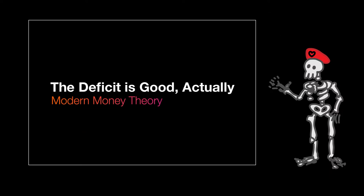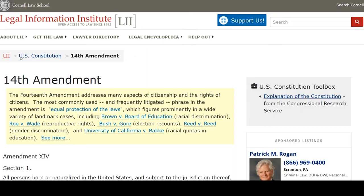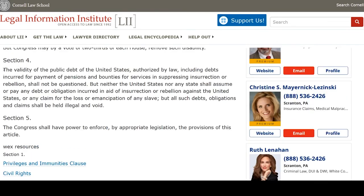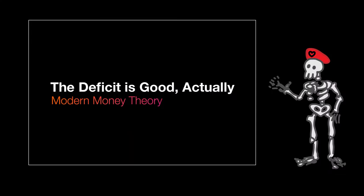So the United States can never, ever be unable to pay its debt. It also can't ever voluntarily not pay its debt. Section 4 of the 14th Amendment makes it unconstitutional: 'The validity of the public debt of the United States shall not be questioned.' The federal government can't be forced to default, and it can't choose to default. It will always have the money to pay its debt — it makes the money.